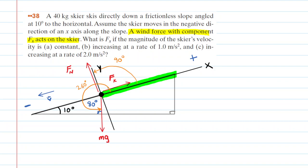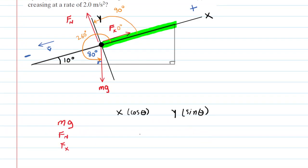For f sub x, which is already pointing along the positive x-axis, the angle is zero degrees. So our three angles are 260°, 90°, and 0°. Now we set up a force table to stay organized and determine x and y components. For mg at 260°: the x-component is mg times cosine of 260 degrees, and the y-component is mg times sine of 260 degrees.